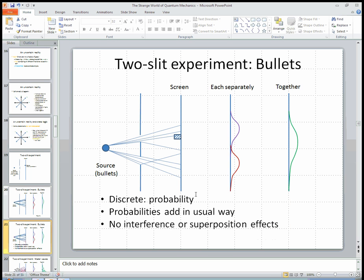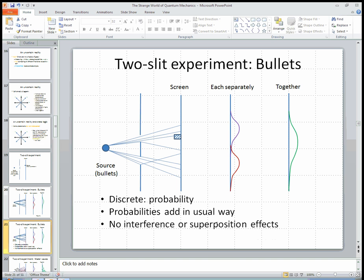So it's discrete, it's probabilistic, the probabilities add in the usual way, and there's no what we could refer to as interference or superposition effects, which we're going to see right now.